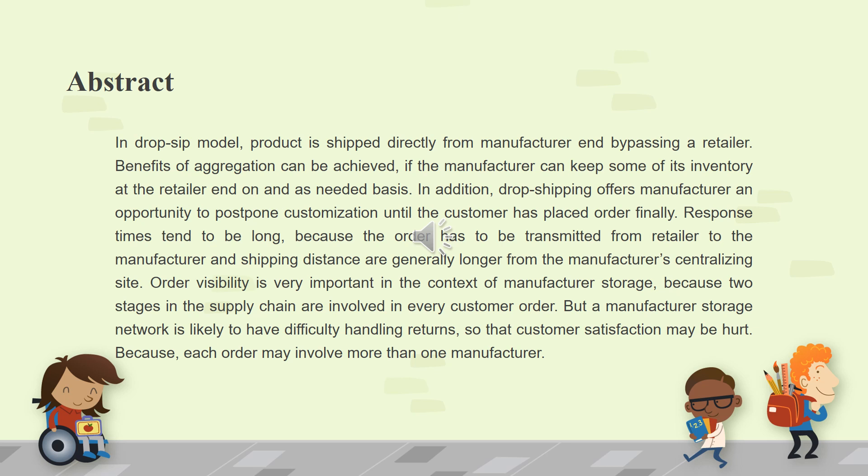Order visibility is very important in the context of manufacturer storage, because two stages in the supply chain are involved in every customer order. A manufacturer storage network is likely to have difficulty handling returns, so customer satisfaction may be hurt, because each order may involve more than one manufacturer.